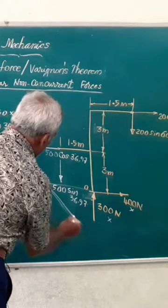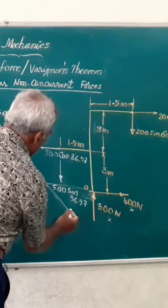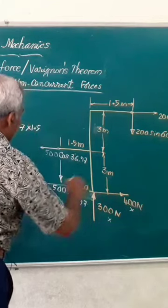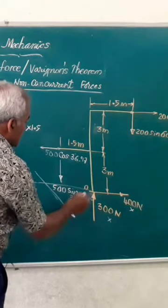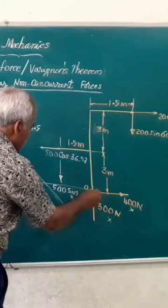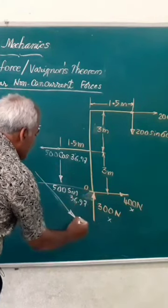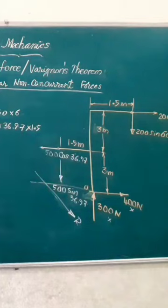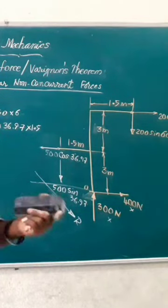So it has to produce a moment like this - an anti-clockwise moment. And what is the distance? The distance between point O and this resultant r is given equal to the value 3.95.